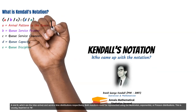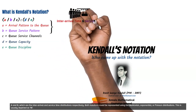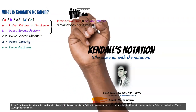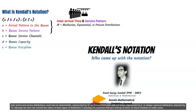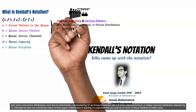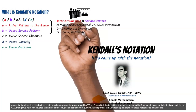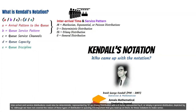A and B, which are the inter-arrival and service-time distributions respectively, could both be represented using the Markovian, Exponential, or Poisson distributions, usually depicted as M. Inter-arrival and service distributions could also be deterministic, represented by D, an Erlang distribution with a K-factor represented by E, or simply a general distribution depicted by G. Although we have not covered the nature of these types of distributions in queuing, it is important that you read up on them for these notations to make sense.